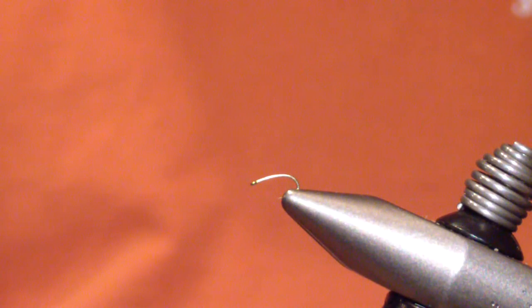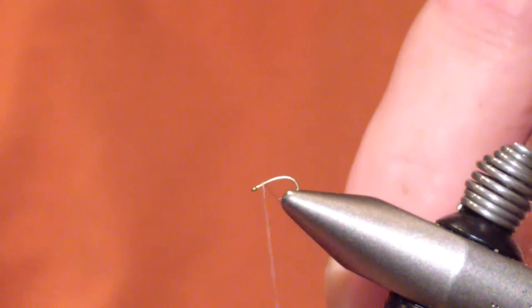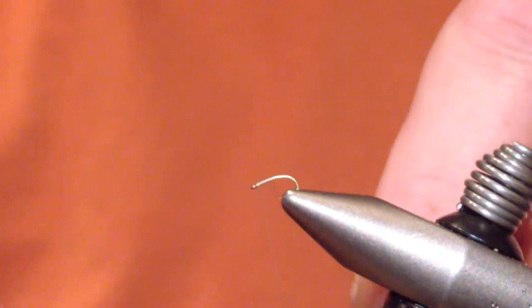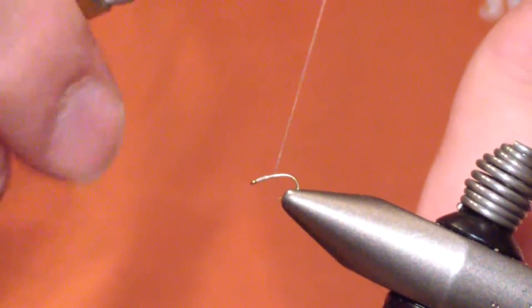I start out with a size 22 Orvis Caddis Emerger Hook, straight eye, and Rusty Dunn Unithread. I start off by building a base.